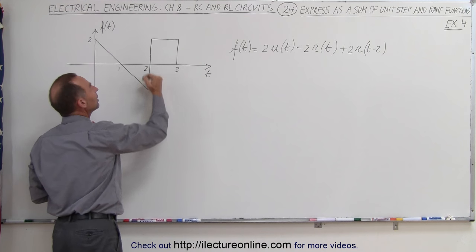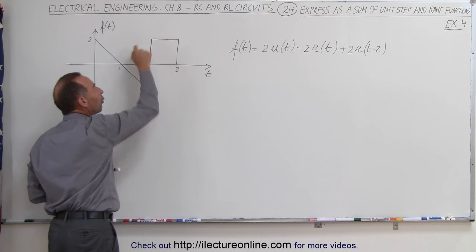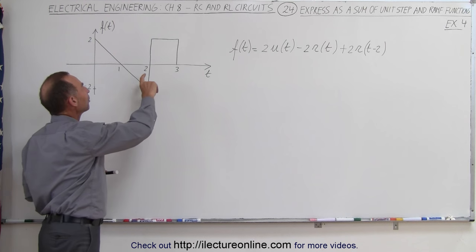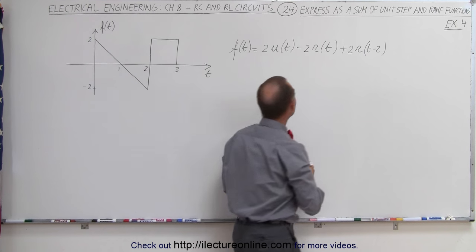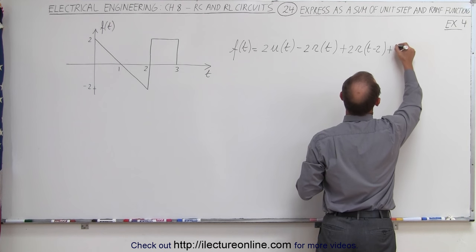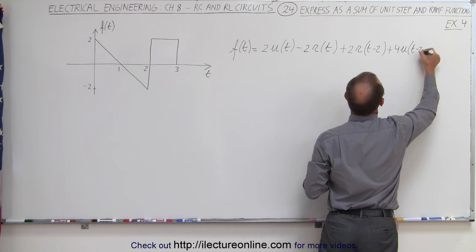But now we're down here and we need to be up here. That's an increase of a total of 4 in amplitude, so we need to add a step function with an amplitude of 4 starting at time equals 2 seconds, so that would be plus 4 times the unit step function offset by 2.